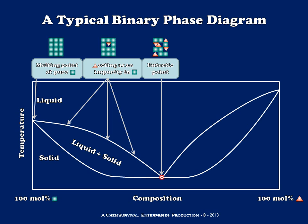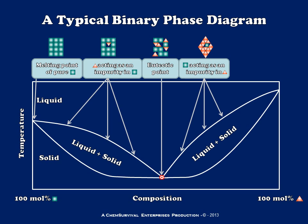After the eutectic point, the diagram starts to head back up toward the melting point of the red compound — presumably because the green compound is now acting as the impurity since it's present in smaller amounts. It's worth noting that the eutectic point in this diagram appears to be right around the middle at about 50 percent, but that's not always the case. Finally I reach the melting point of my pure red compound, again a single temperature at which solid and liquid coexist in equilibrium. The highest points on the entire phase diagram correspond to the melting points of the pure substances — so why does adding a little bit of something else always bring that melting point down?